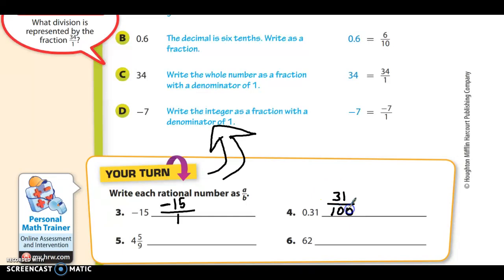And number 5, 4 and 5 ninths is the same as 4 times 9 is 36 plus 5 is 41, 41 ninths. And the last one, 62, that's the same as any whole number over 1, 62 over 1. If you got all those right, great job. If not, review the examples above and practice those a little bit more.